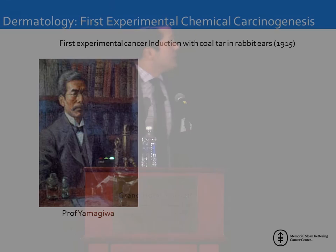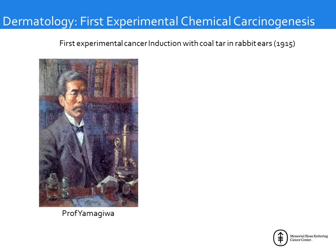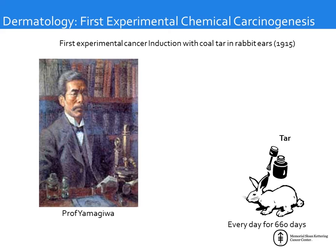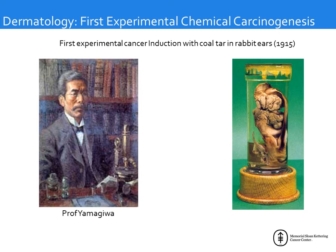Another intersection occurred in 1915 when Professor Yamagiwa from Japan conducted the first experimental cancer induction in a scientific manner — he painted coal tar on rabbits' ears for 660 days every day, leading to the development of squamous cell carcinoma in the rabbit's ears. There is now a museum in London where you can see the ear of the first rabbit in which he caused that squamous cell carcinoma.